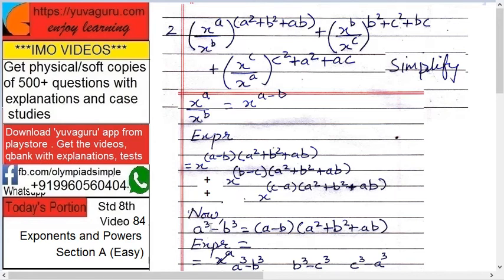What is the formula for a cube minus b cube? A cube minus b cube equals a minus b into a squared plus b squared plus ab.